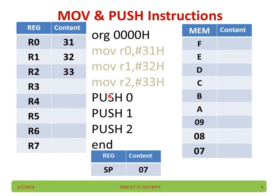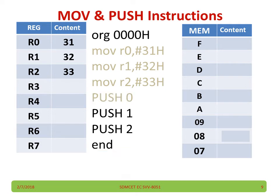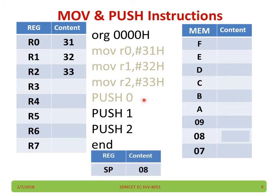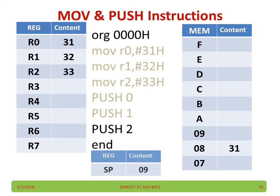Now coming to the push operation. When I do push 0, the 0th location means R0 register content, which is 31, will be moved to the stack area. What is that address? 8. Because whenever I am doing a push operation, SP is incremented by 1 then the content will be copied. Now the 8th location becomes 31. Similarly, push 1 when I execute: SP is incremented by 1, and now the 9th location will become the R1 content.